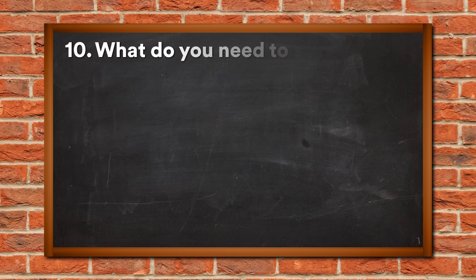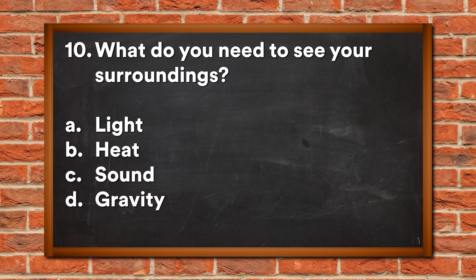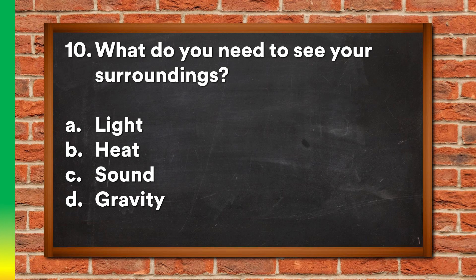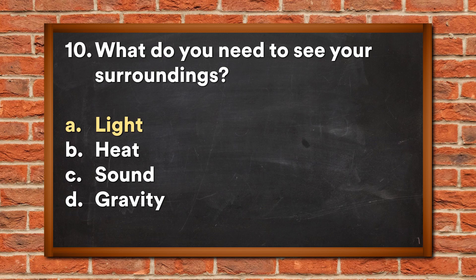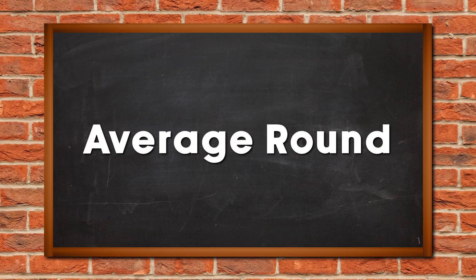Question 10: What do you need to see your surroundings? A. Light, B. Heat, C. Sound, D. Gravity. The answer is A, Light. Let's now move on to the average round.